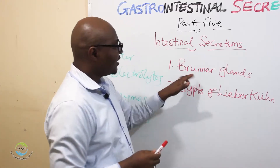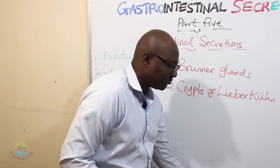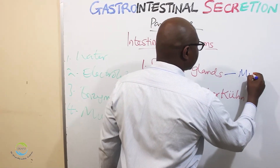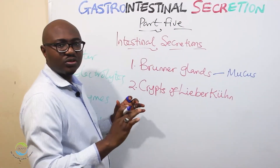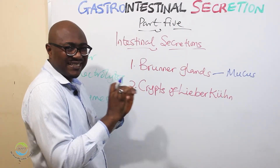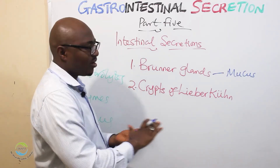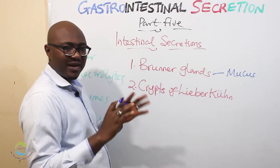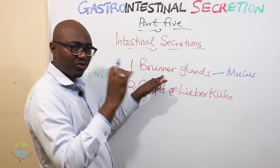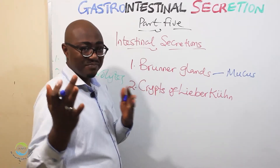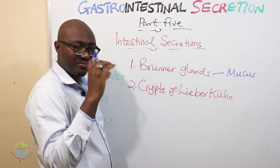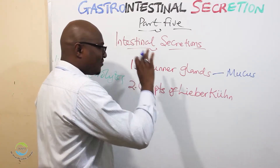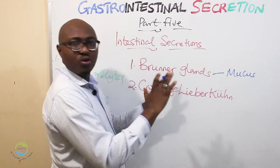So what do the Brunner glands do? Simple — they mainly secrete mucus. The mucus, which is thick and slimy, helps to coat the mucosa to prevent any corrosive action from acid. That's why they are located at the duodenum, because the duodenum is the part immediately exposed to gastric acid. That's why you have a special gland dedicated to mucus secretion there.